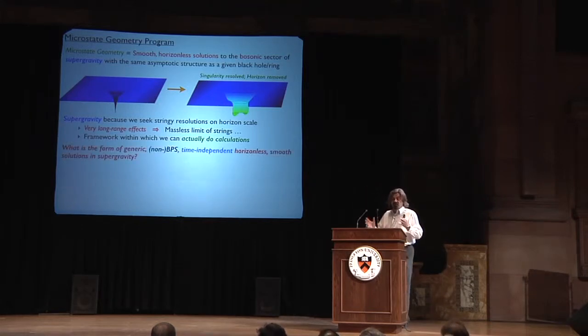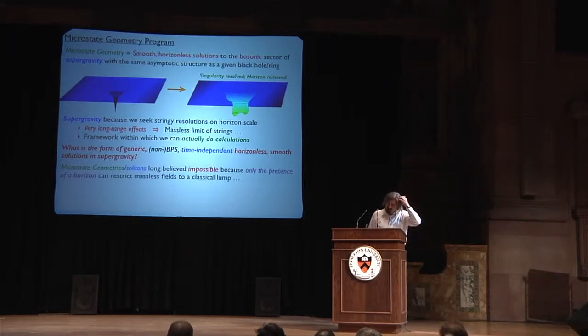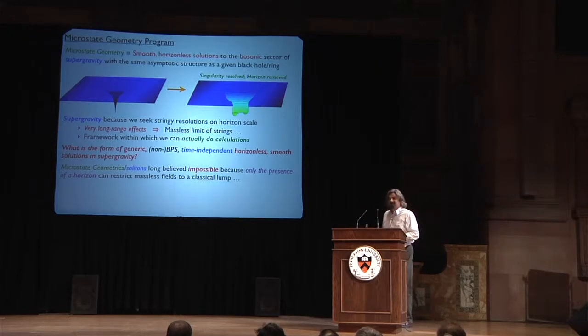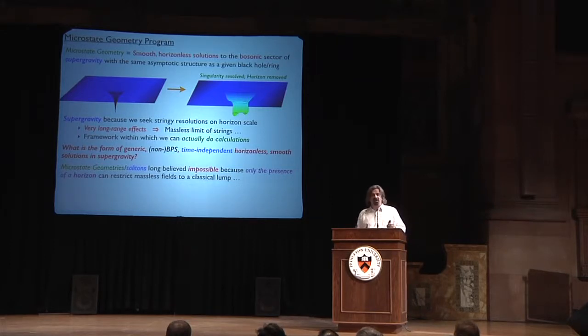Then you can ask the question, what is the form of the generic, and I stress non-BPS, time-independent horizonless smooth solution in supergravity? Can you get a soliton that looks just like a black hole from a distance? Now, since there are graduate students here, it's worth saying that both Joseph Abena and I, when we first did this, were too ignorant to know that this was impossible. So basically, the word of comment I would make is, whenever you see a no-go theorem, that really means that the people who wrote it weren't clever enough.